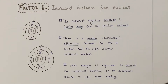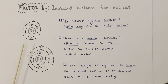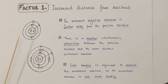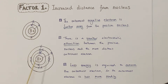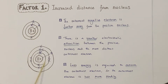The first factor which influences the reactivity of the group 1 metals is the increasing distance of the outermost electron from the positive nucleus. The diagrams shown here are representations of lithium and of sodium, and you can see that we have this increasing distance between the positive nucleus and the outermost electron from the lithium diagram to the sodium diagram.